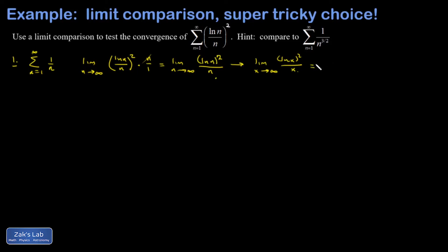So I use L'Hopital's rule once. And I get two natural log of x times the derivative of natural log of x. There's the chain rule in action. And then the denominator is one.